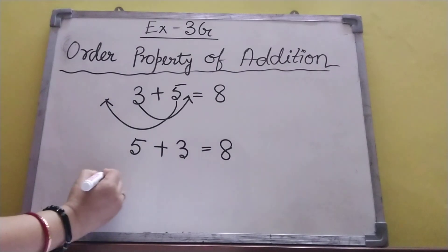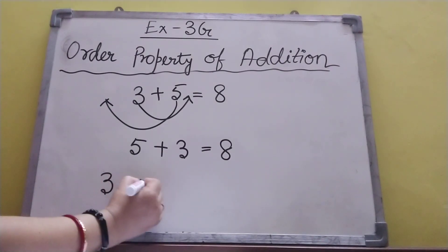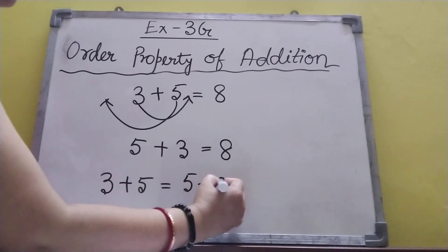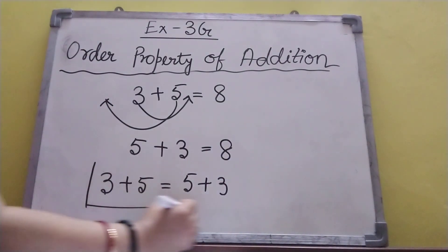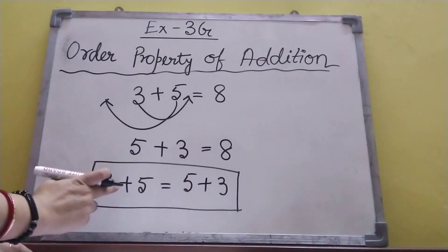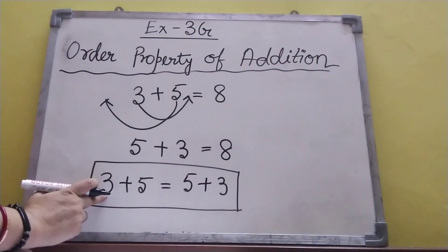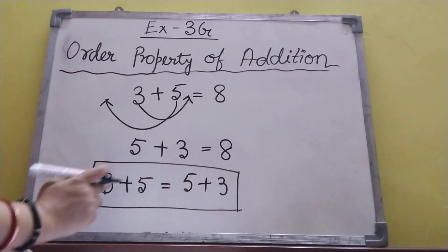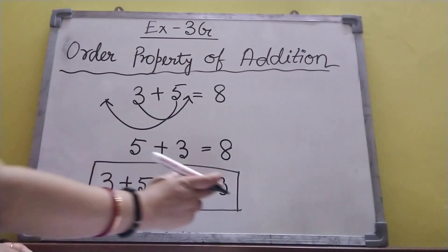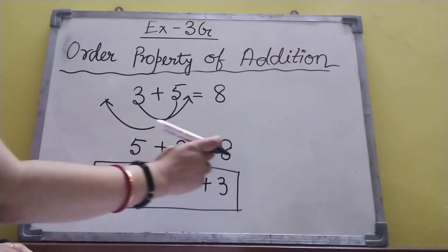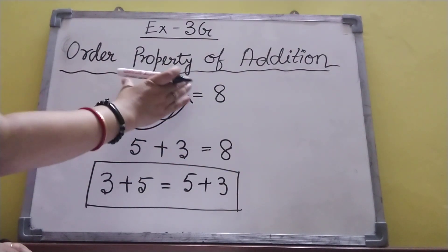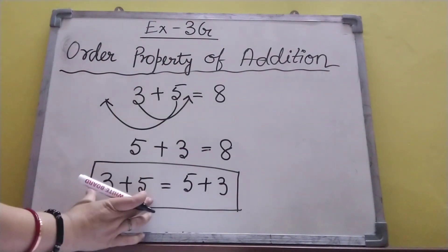We can write like three plus five equal to five plus three. This is called order property. When we add two numbers, we can change the order and we are always getting the same result. So we can equalize this.